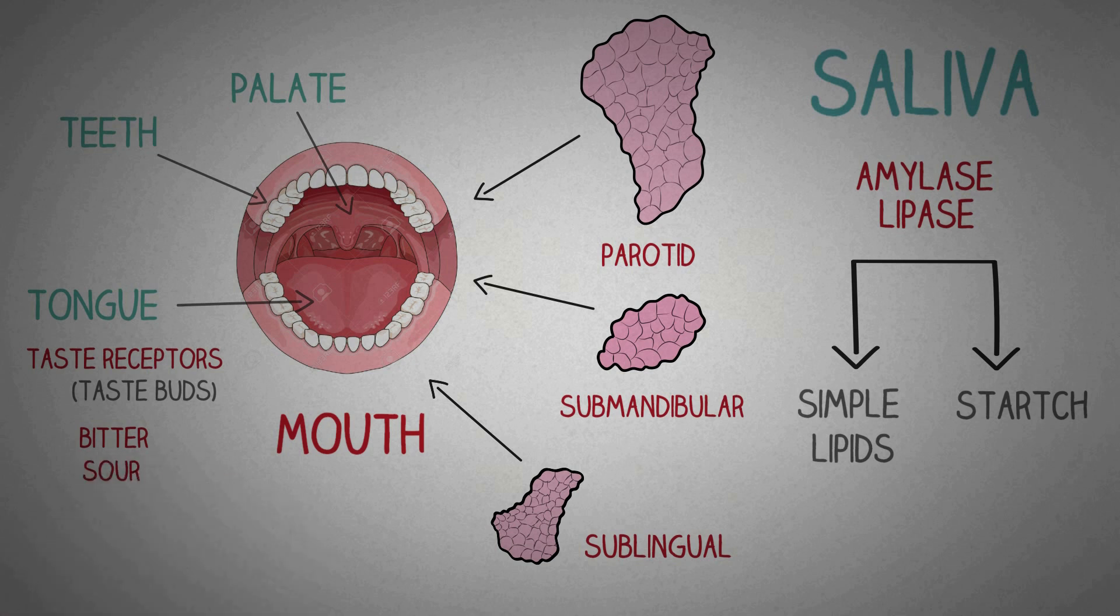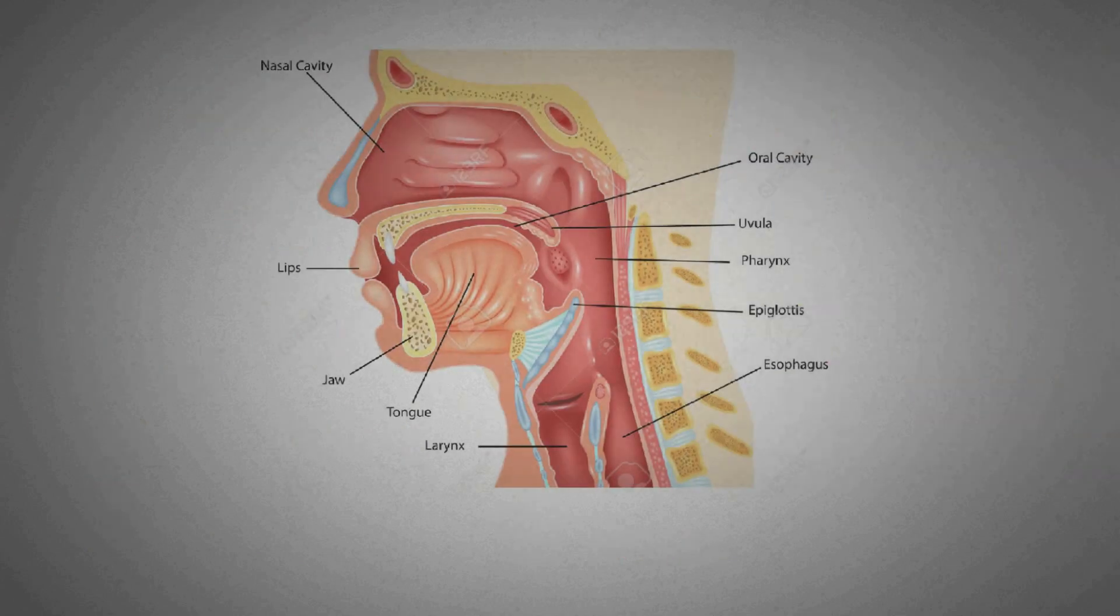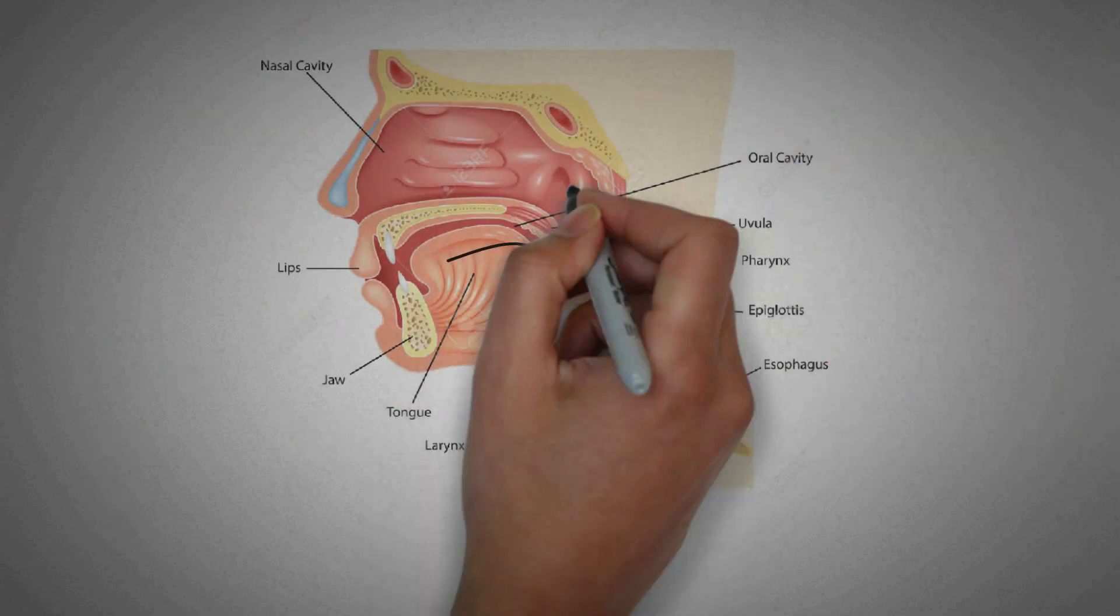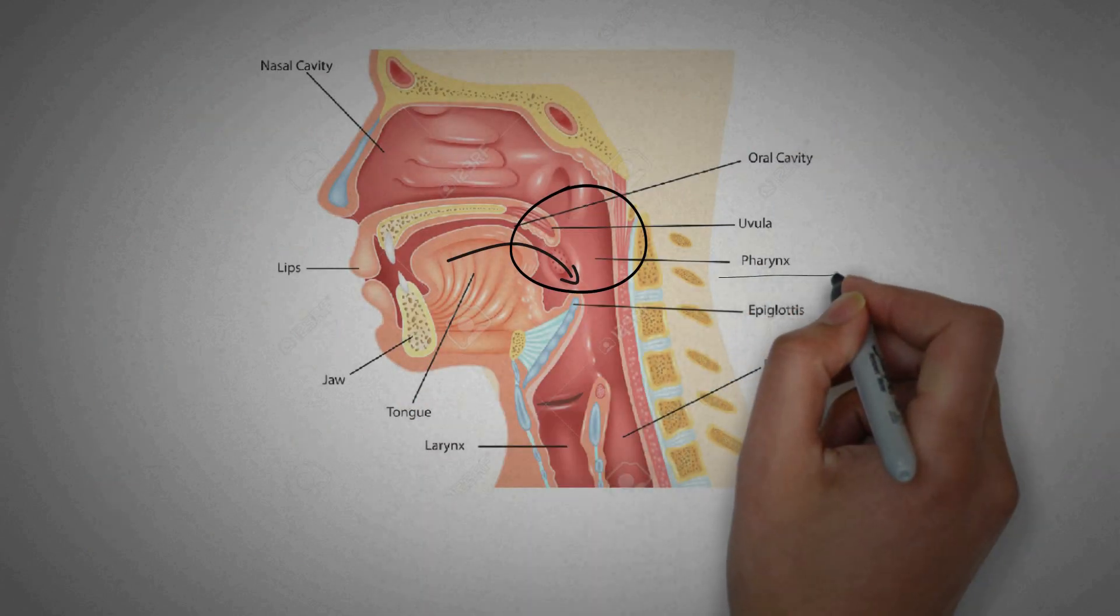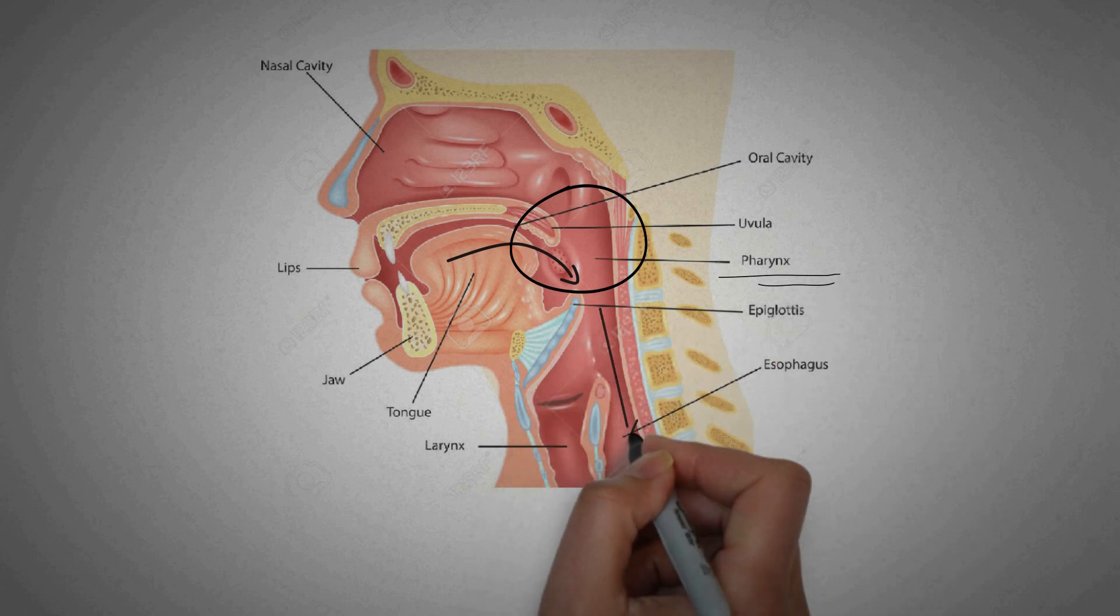The tongue also contains thousands of taste receptors contained in structures known as taste buds. These give the information about the four basic tastes. So, after the food has been chewed and mixed with the saliva, it then passes into the pharynx and then into the esophagus through a series of controlled muscle contractions known as the deglutition reflex.